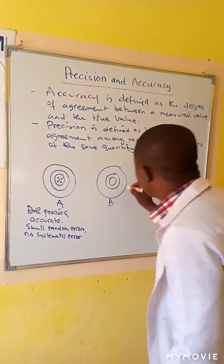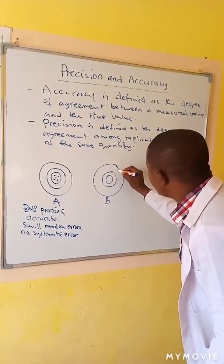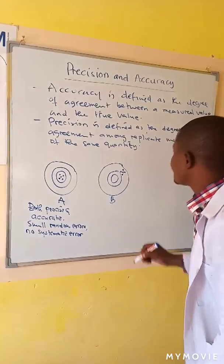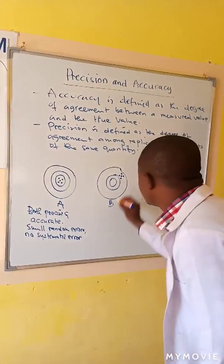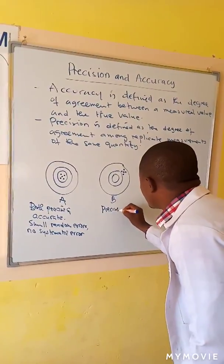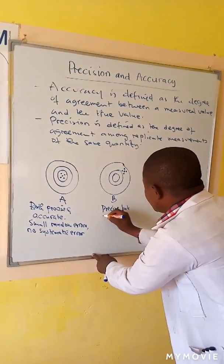In B you miss the target then all your bullets land there. In this case it means you are precise but inaccurate.